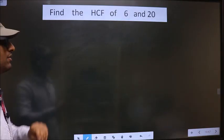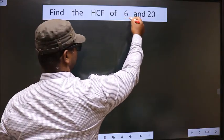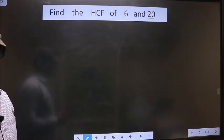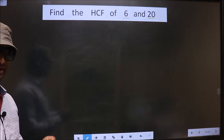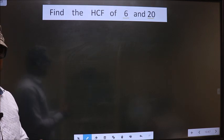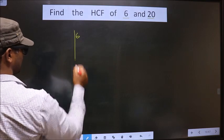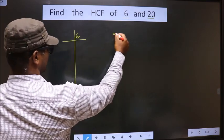Find the HCF of 6 and 20. To find the HCF, first we should do prime factorization of each number separately. That is 6, 20.